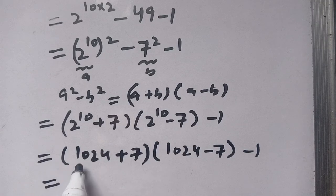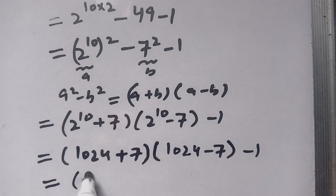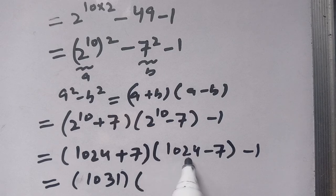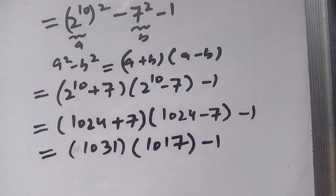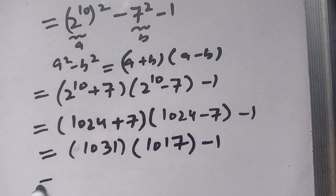In the next step, we compute: 1024 plus 7 equals 1031, and 1024 minus 7 equals 1017. So we have 1031 times 1017, minus 1. For simplification, we now break down 1031 and 1017 for multiplication.